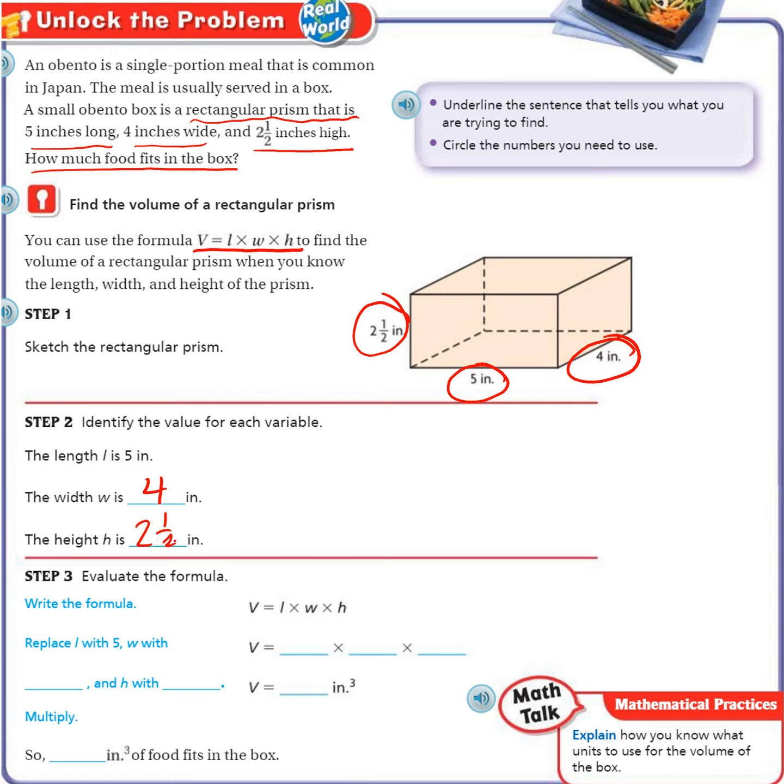But again, the order of these numbers, if you accidentally put 2.5 for the width and 4 for the height, it won't affect your answer. And remember, the mixed number can be written as 2.5 if you want to use decimals.